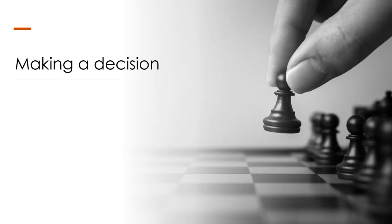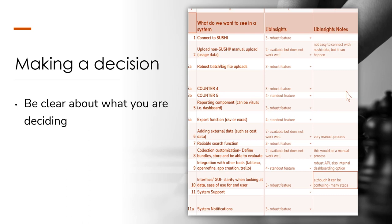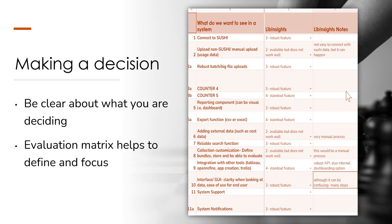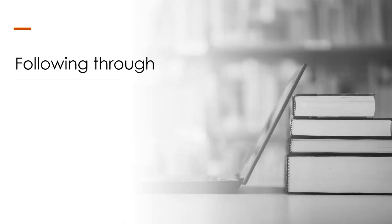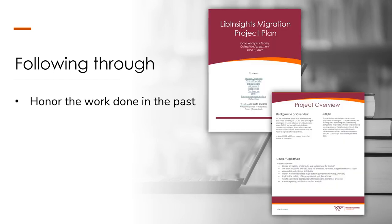After evaluating our needs, we developed an evaluation matrix to compare different systems alongside our own database. The matrix included all the features we'd identified as needed in a usage collection tool so we could see what each system could provide and how the CAT compared. Our matrix demonstrated that it was time to end the CAT and move on to LibInsights. We decided to sunset the CAT at the end of the spring semester, and by June had begun setting up our LibInsight instance. Another part of following through was honoring the work done on the CAT — we started projects that could build on our database development work.